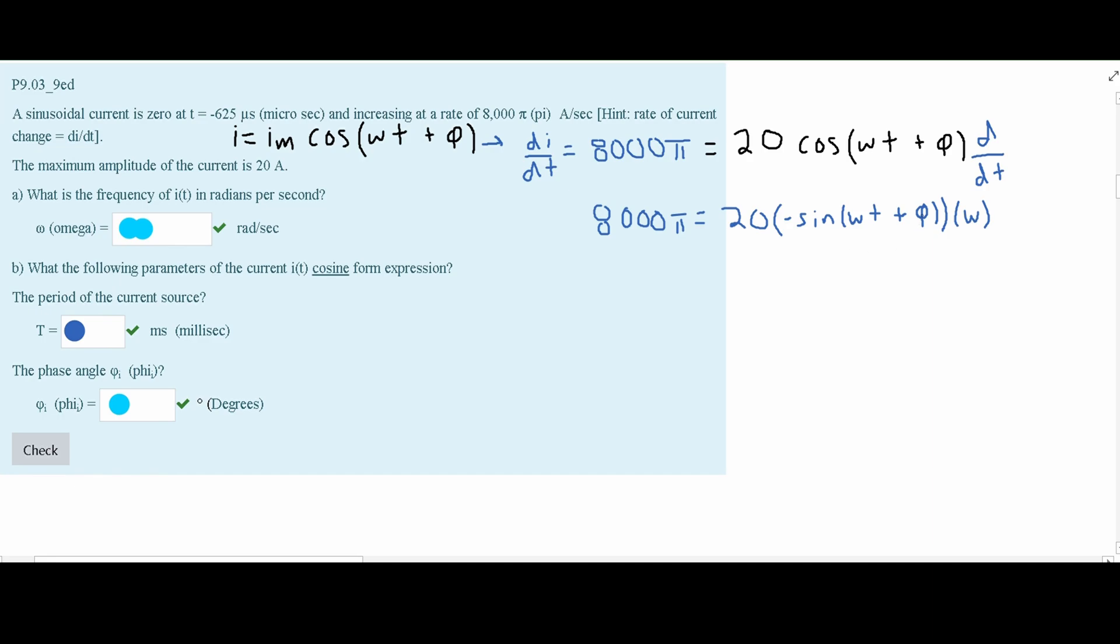Now, from here, we want to find our omega. Since we are using the maximum amplitude right here, we are going to want to find the max that our sine can be.